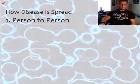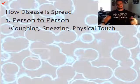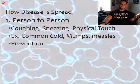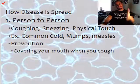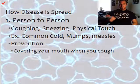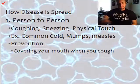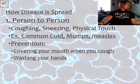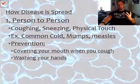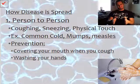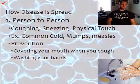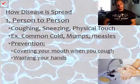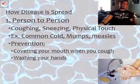How do diseases spread? The first type is person to person — the most basic. Examples include coughing, sneezing, and physical touch. The common cold, mumps, and measles are all spread from person to person. Prevention is basic: cover your mouth when you cough, do the 'Batman sneeze,' and wash your hands. They've been preaching this since elementary school — if you go to the bathroom, wash your hands; if you cough into your hands, wash them.